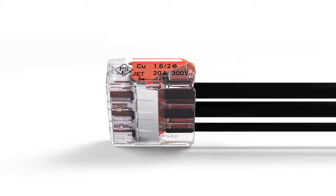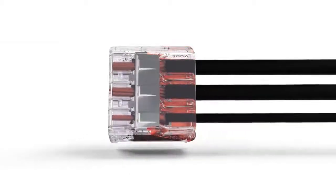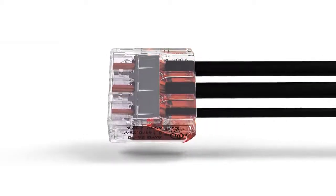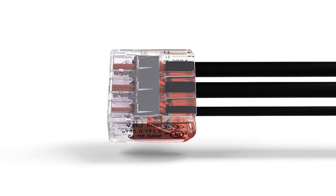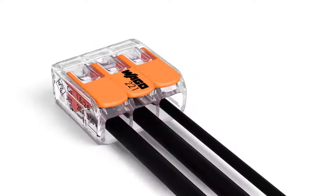The transparent housing enables visual inspection of the correct conductor position, providing a clear view of conductors that have not been inserted far enough or that have not been stripped to the proper length. A gas-tight contact point provides a durable and secure connection between conductor and current bar.